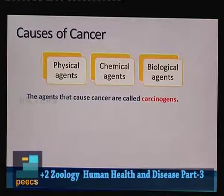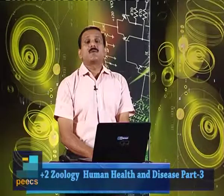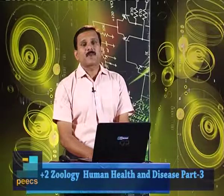Any agent that causes cancer — whether physical, chemical or biological — is called a carcinogen. It is important to note that all normal cells have proto-oncogenes or cellular oncogenes. These are not cancer-causing on their own; only when proto-oncogenes are converted into oncogenes does cancer result.